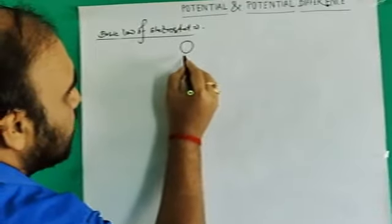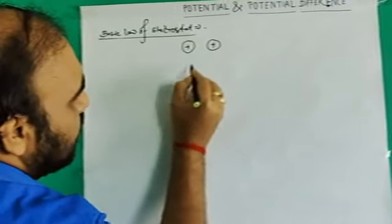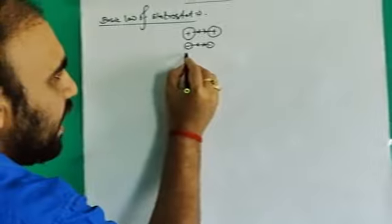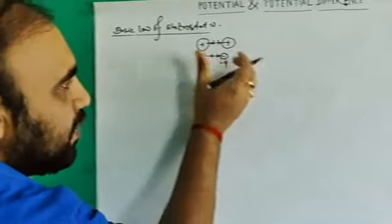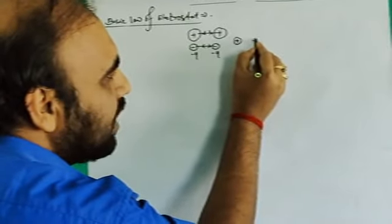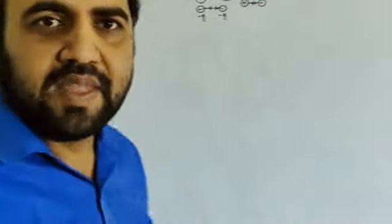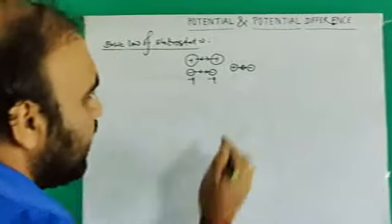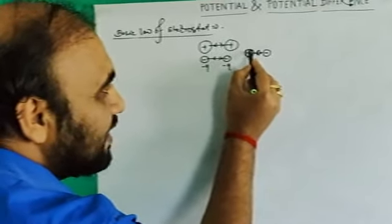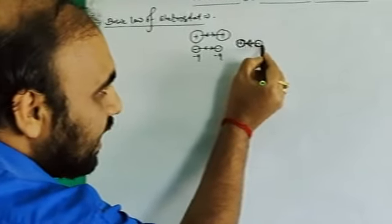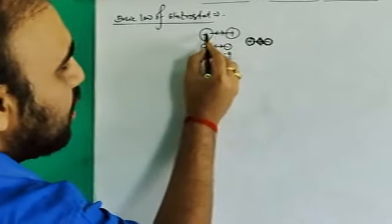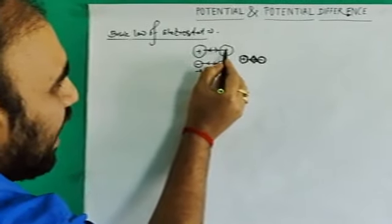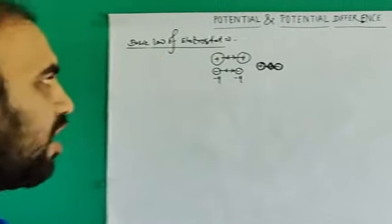Very simple: if we consider two positive charges, these two charges will repel each other. If we consider two negative charges, they also repel each other. Whereas if we consider a positive charge and a negative charge, then these two will attract each other. This thing is known as the basic law of electrostatics.